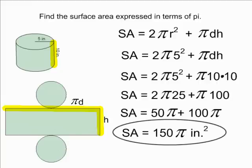Because pi is very close to the value of 3, we can multiply 150 by 3 and say that the actual surface area is very close to 450 square inches. If you wanted to be even more accurate than 450, you could multiply 150 times 3.14 or by 22 sevenths if you express pi as a fraction.